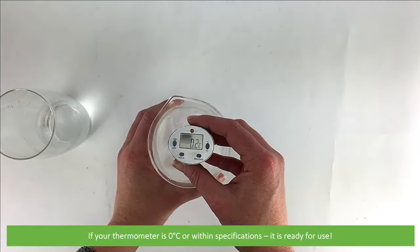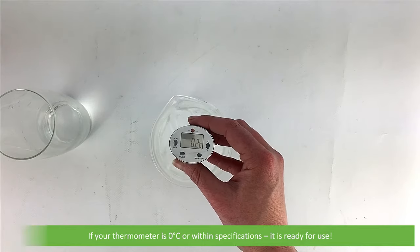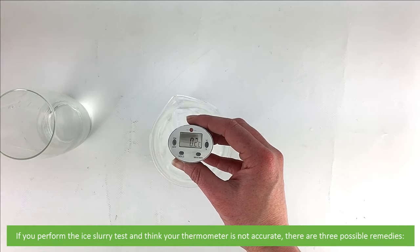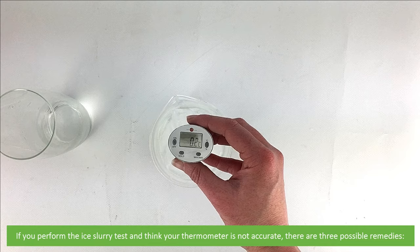If your thermometer is zero or within its specifications, it's ready for use. If you have performed this ice slurry test and you think your thermometer is not accurate, there are three possible remedies.